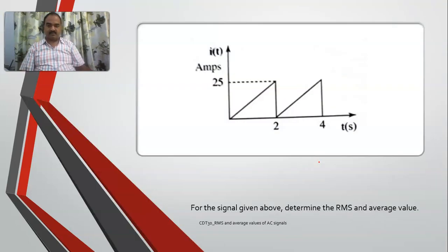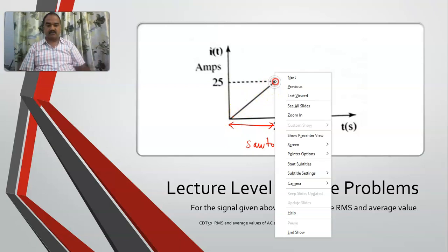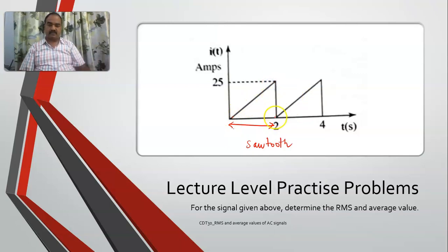And we will try to practice more problems in the class. So come prepared for the class tomorrow and take it as a homework. This is a sawtooth waveform. See the periodicity. This is the periodicity. And it is taking a straight line from 0 to 2. And at 2, you can ignore it, because it is 0.